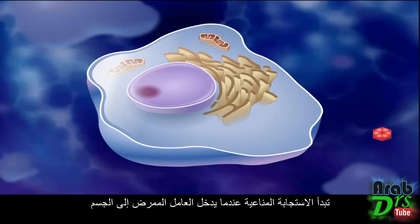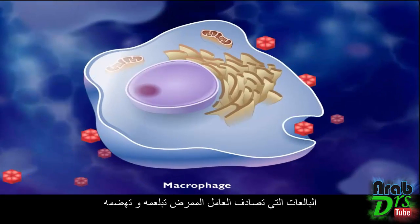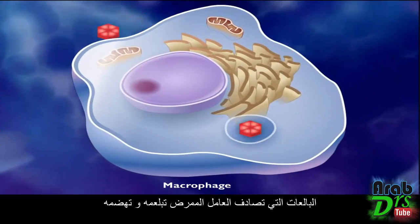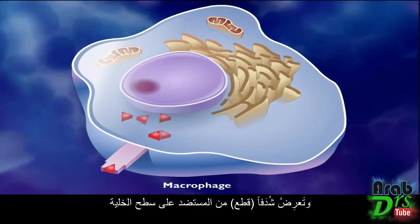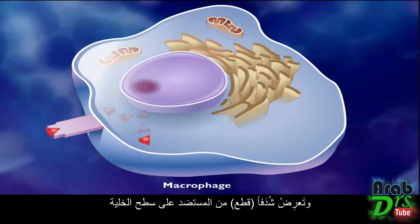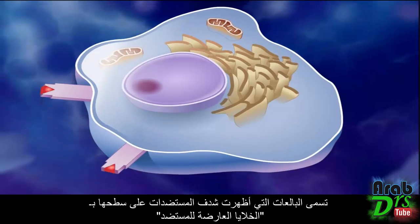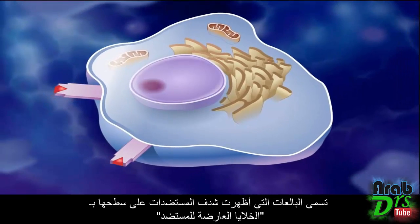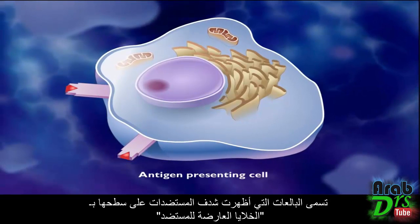Activation of the immune response typically begins when a pathogen enters the body. Macrophages that encounter the pathogen ingest, process, and display the antigen fragments on their cell surfaces. Macrophages with antigen fragments displayed on their surfaces are called antigen-presenting cells.